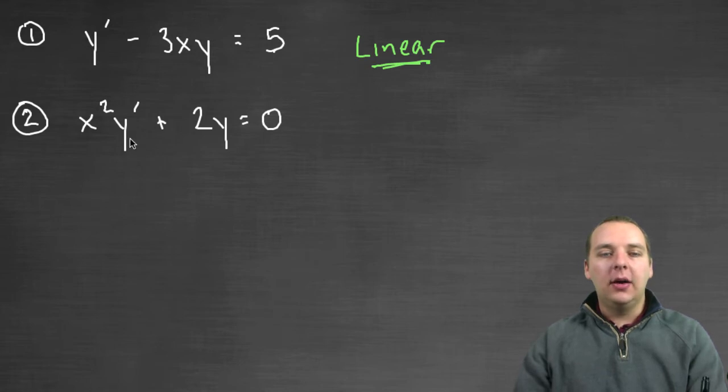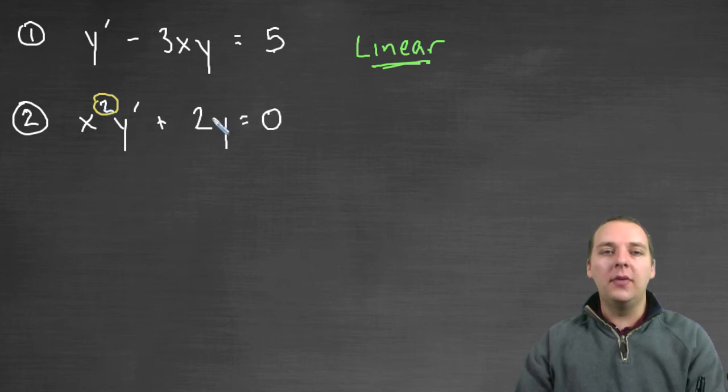How about this guy? I see a couple things that concern me. What about this square? Does that concern you? It shouldn't because this is not a square of a y term or a dependent variable or the dependent variable's derivative y prime. It's x squared. That's fine. So I have no issues with that.